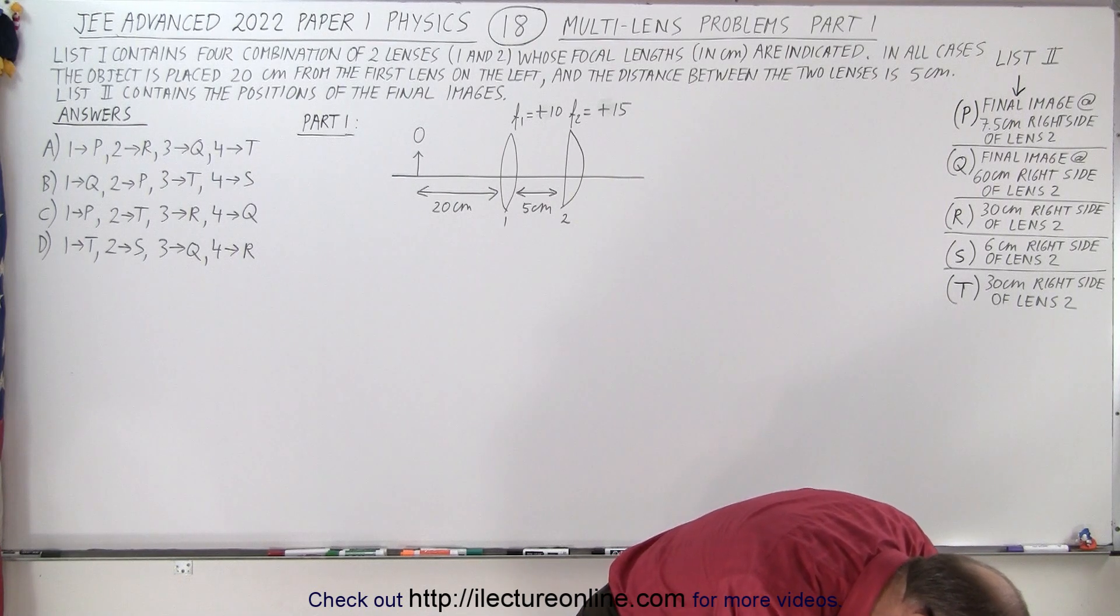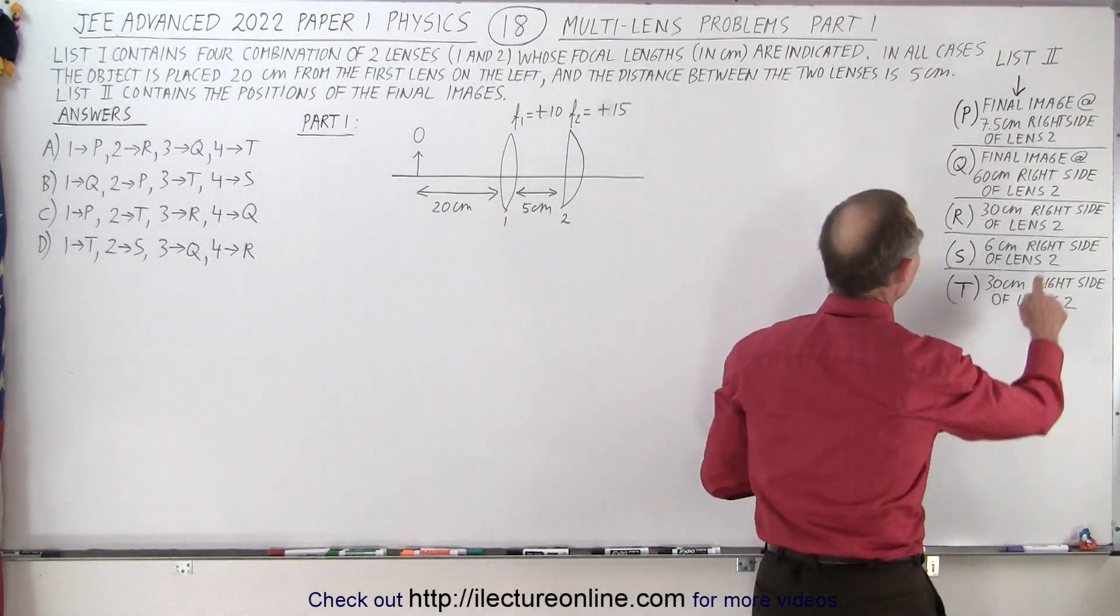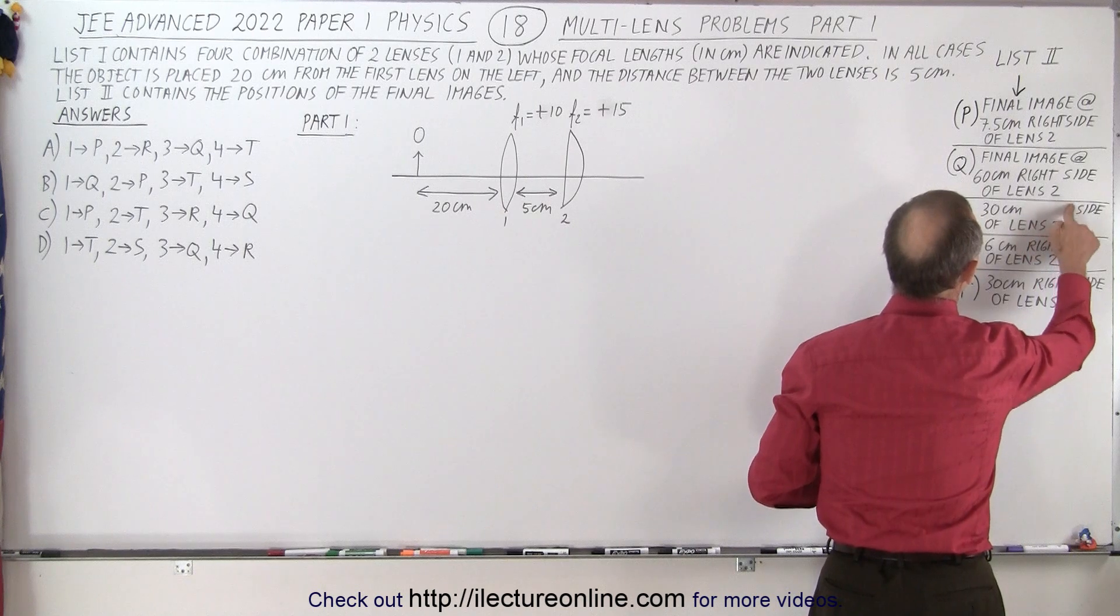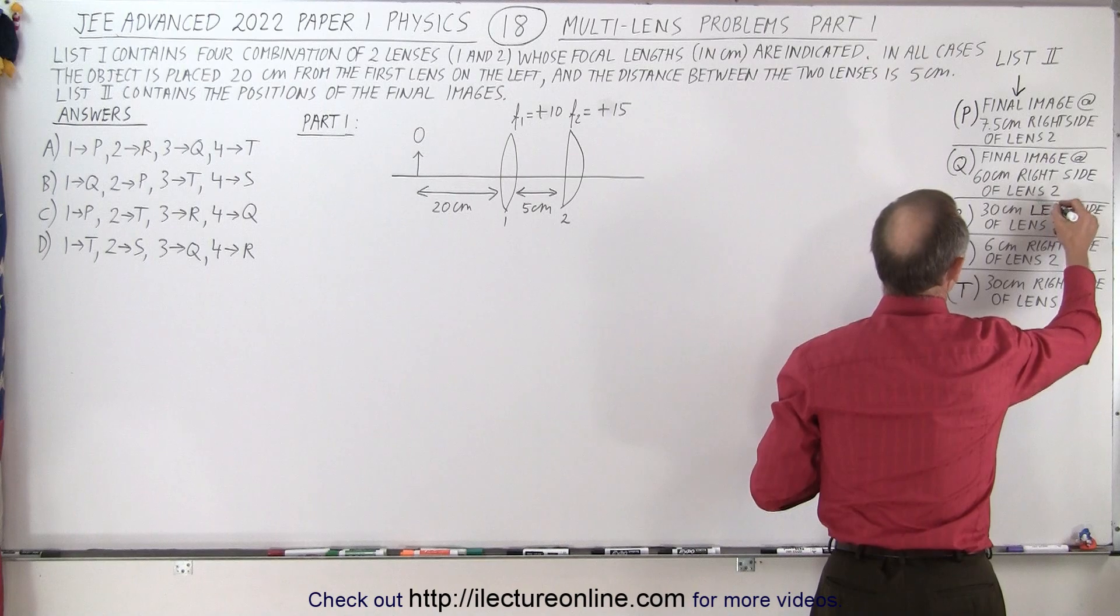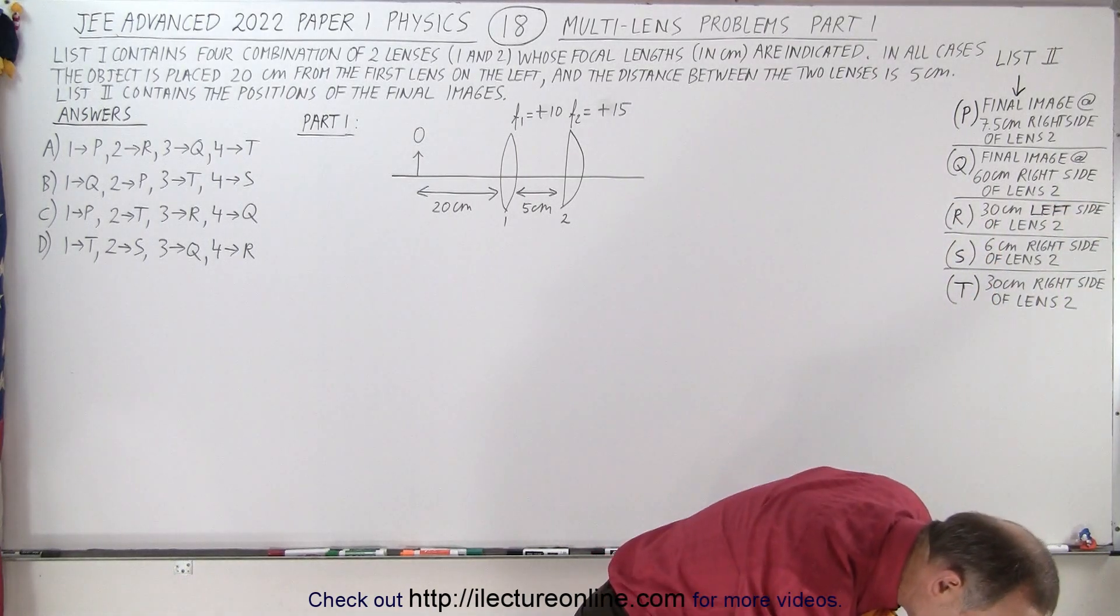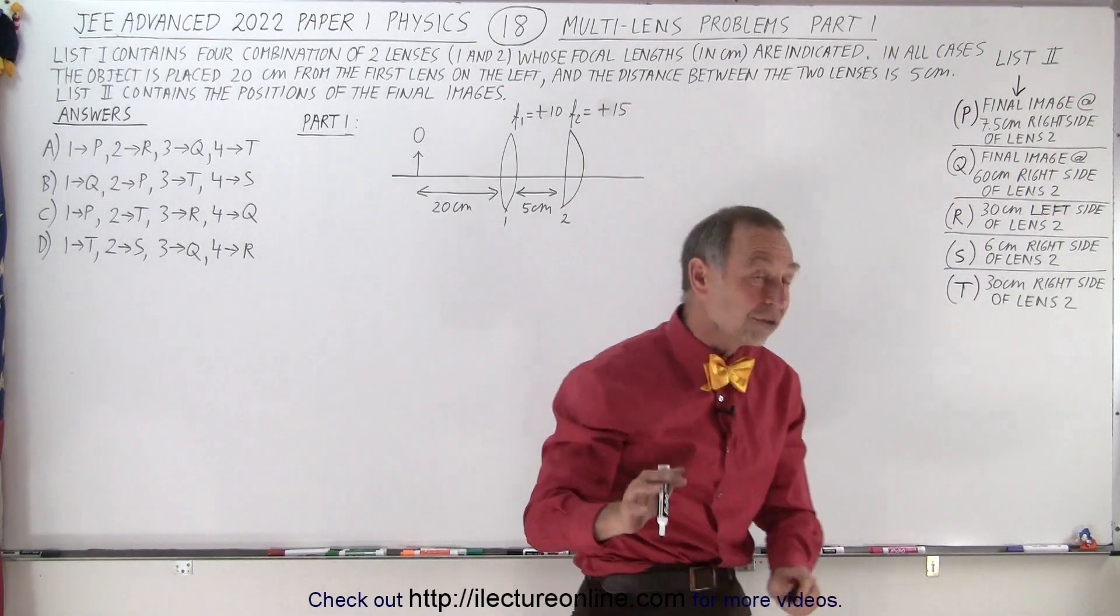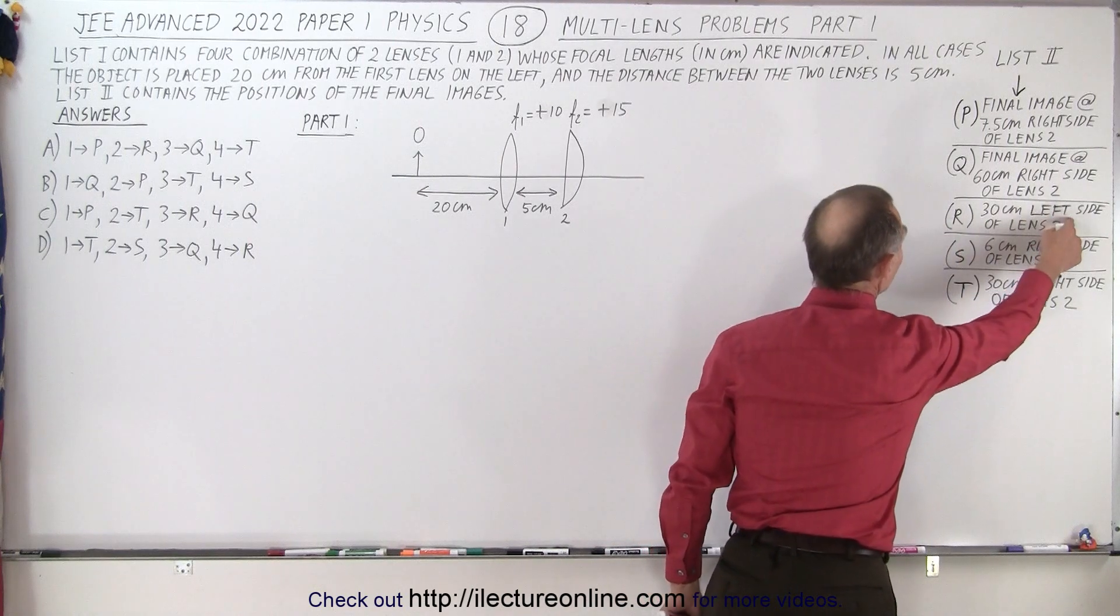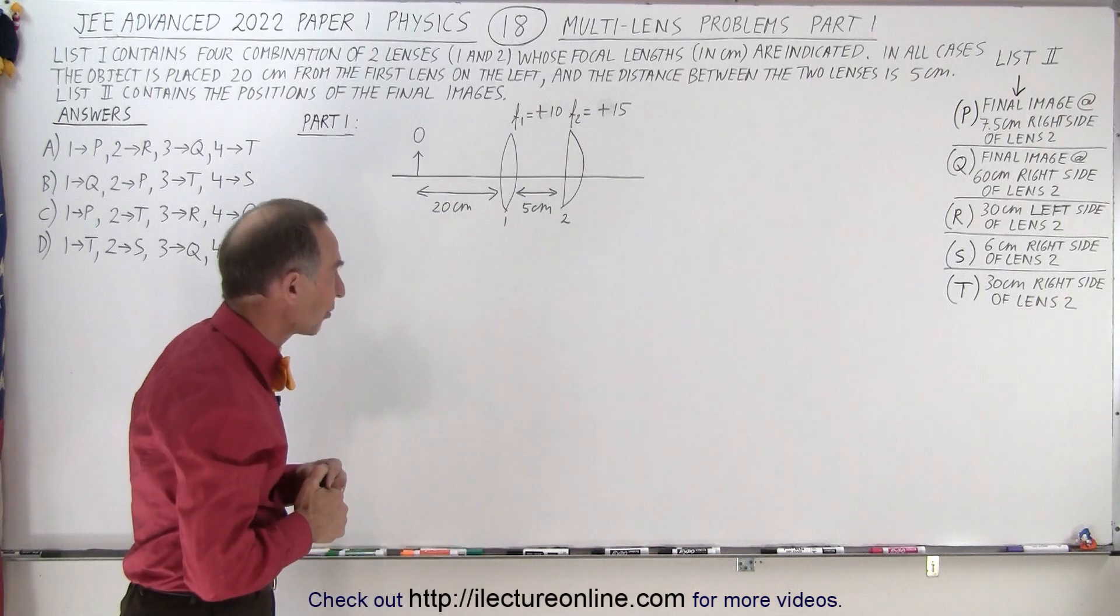Let me take a look here. On the right side, 30 centimeters on the, oh, left side. Good thing that I saw that. So here, this is 30 centimeters to the left, left side of lens two. So there, we got to be careful here. It's all relative to lens two. But the only one right here, R, is to the left side of lens two. Everything else is to the right side of lens two. So those are the five possible answers.